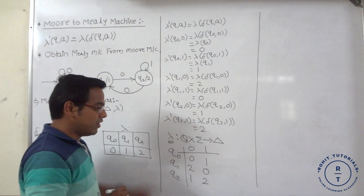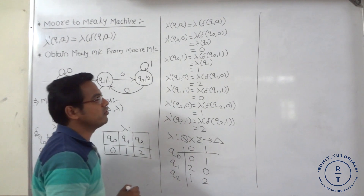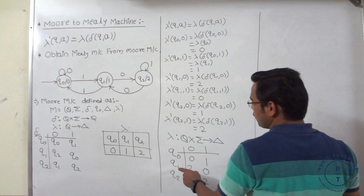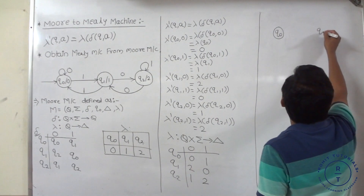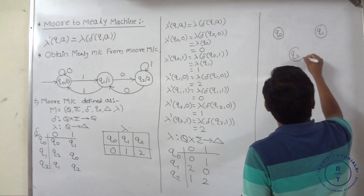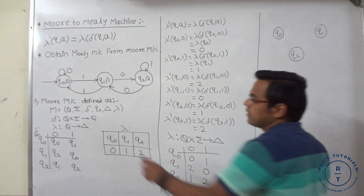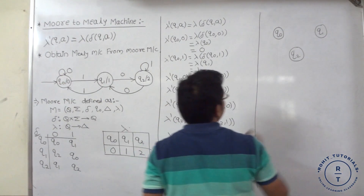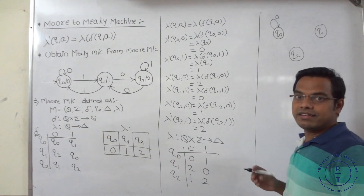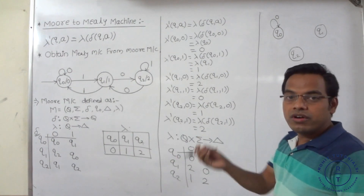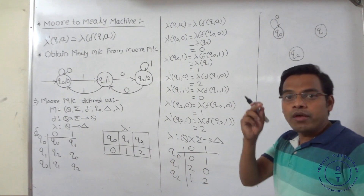With the help of this newly generated lambda (machine function), we draw the Mealy machine. The Mealy machine also consists of 3 states: q0, q1, q2. The transition function of the Moore machine and Mealy machine is the same — only the output function or machine function (lambda) changes. Transition: q0 with input 0 → self-loop at q0; q0 with input 1 → goes to q1.